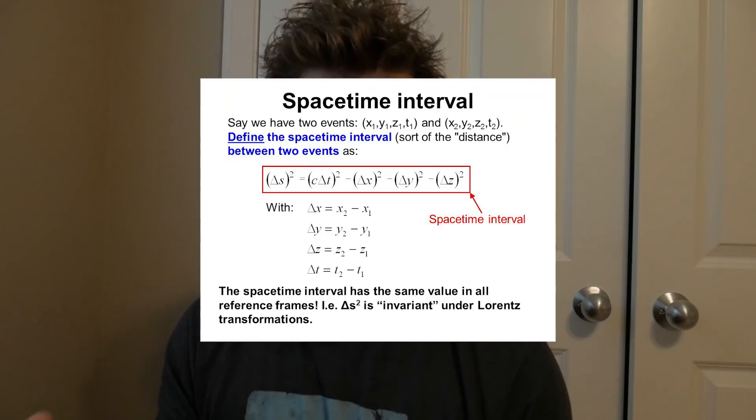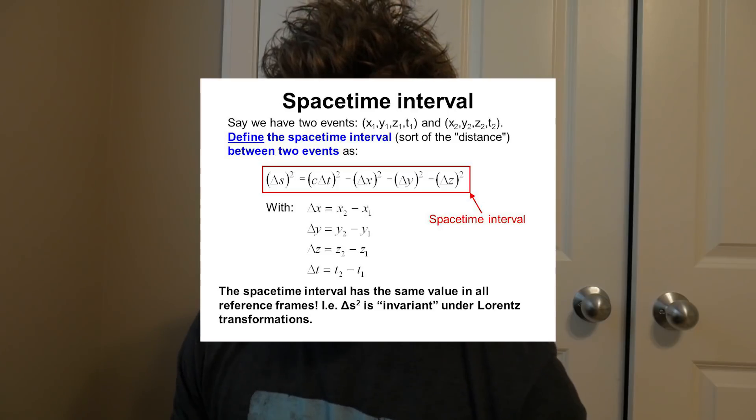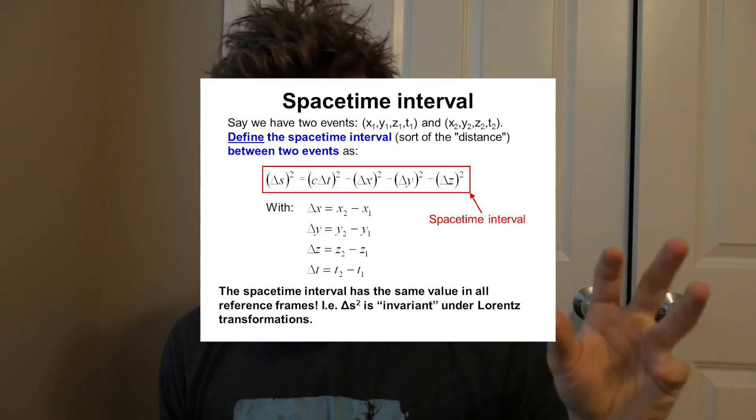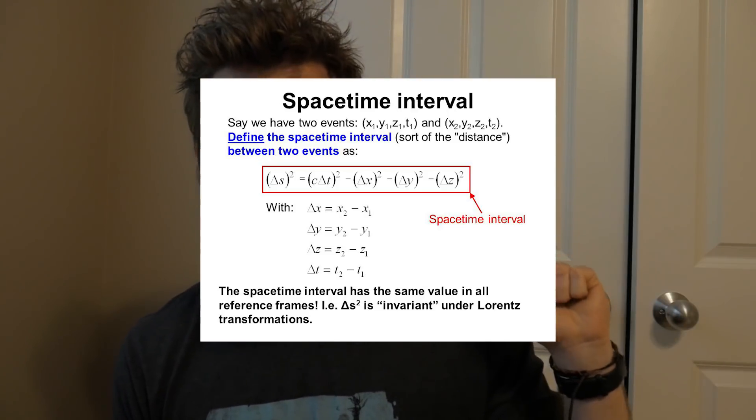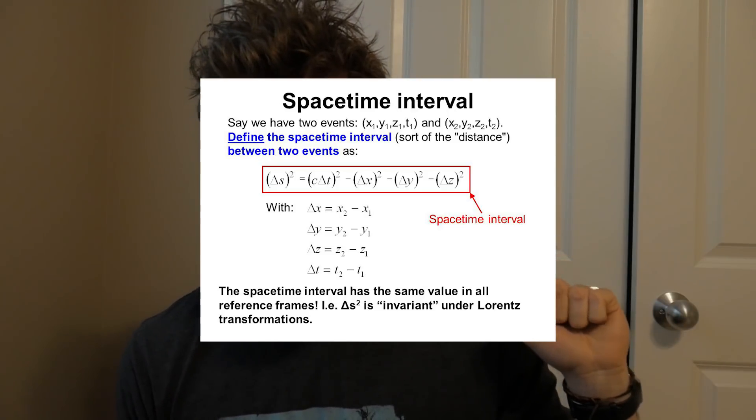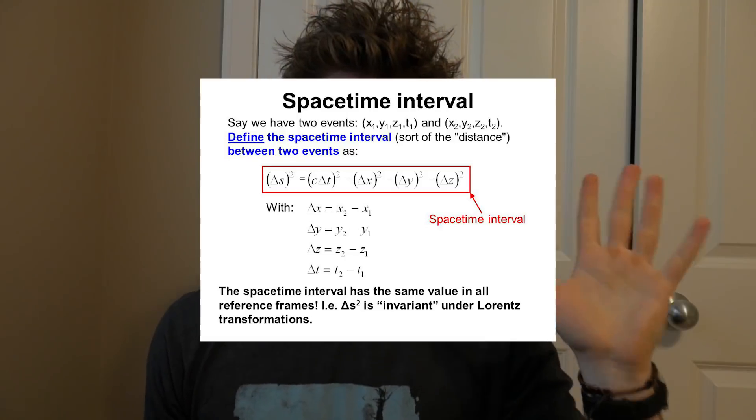The length of this four-vector is said to be an invariant quantity, meaning it doesn't change depending on your reference frame. If you were to take out the time part of the four-vector and measure the length of this vector, all that tells you is the definition of the Pythagorean theorem. So in flat space, without the time part, what this gives you is the definition of a straight line.